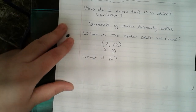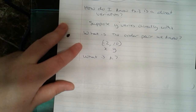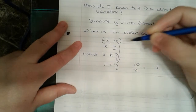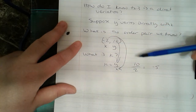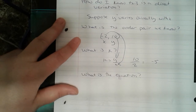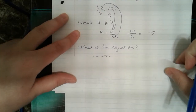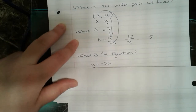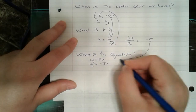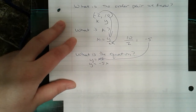The next thing we have to do is find k. k is y over x, so I can plug in 10 for y and negative 2 for x. 10 divided by negative 2 is negative 5. The direct variation equation is y equals kx, and we can plug in negative 5 for k, giving us y equals negative 5x.